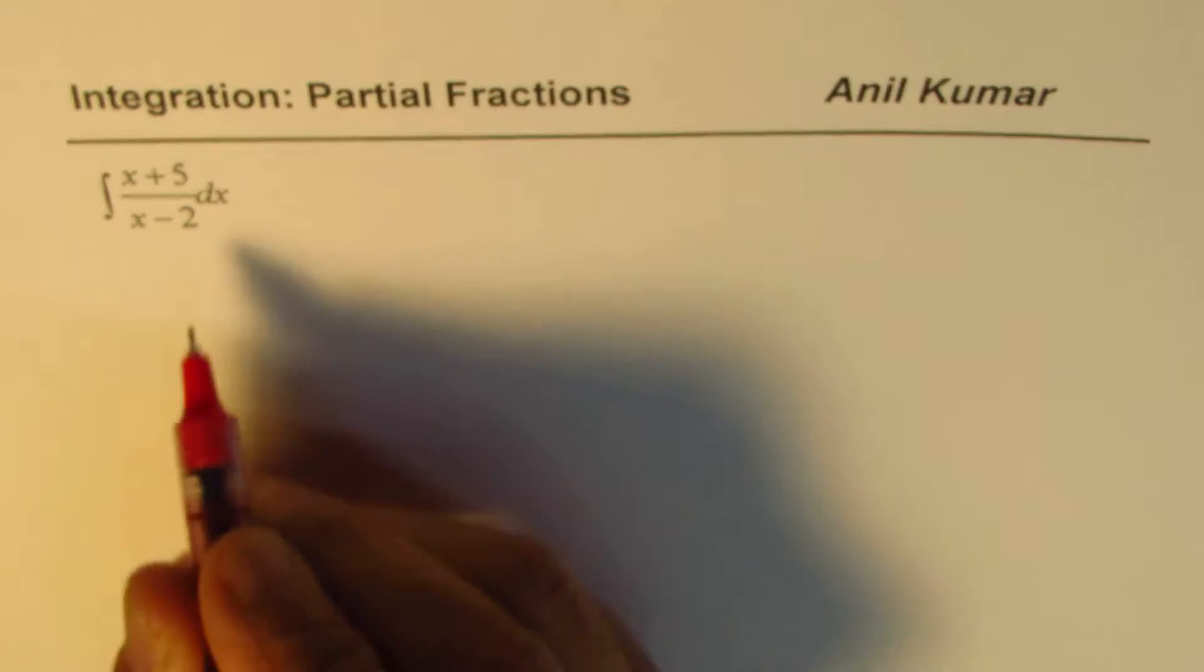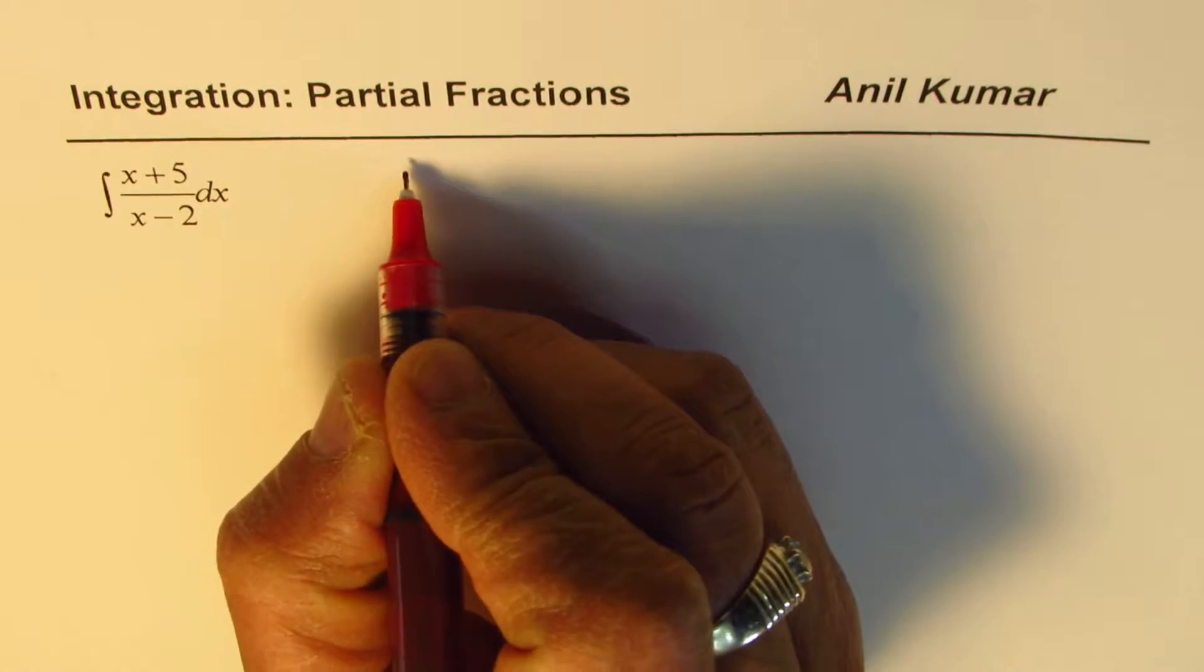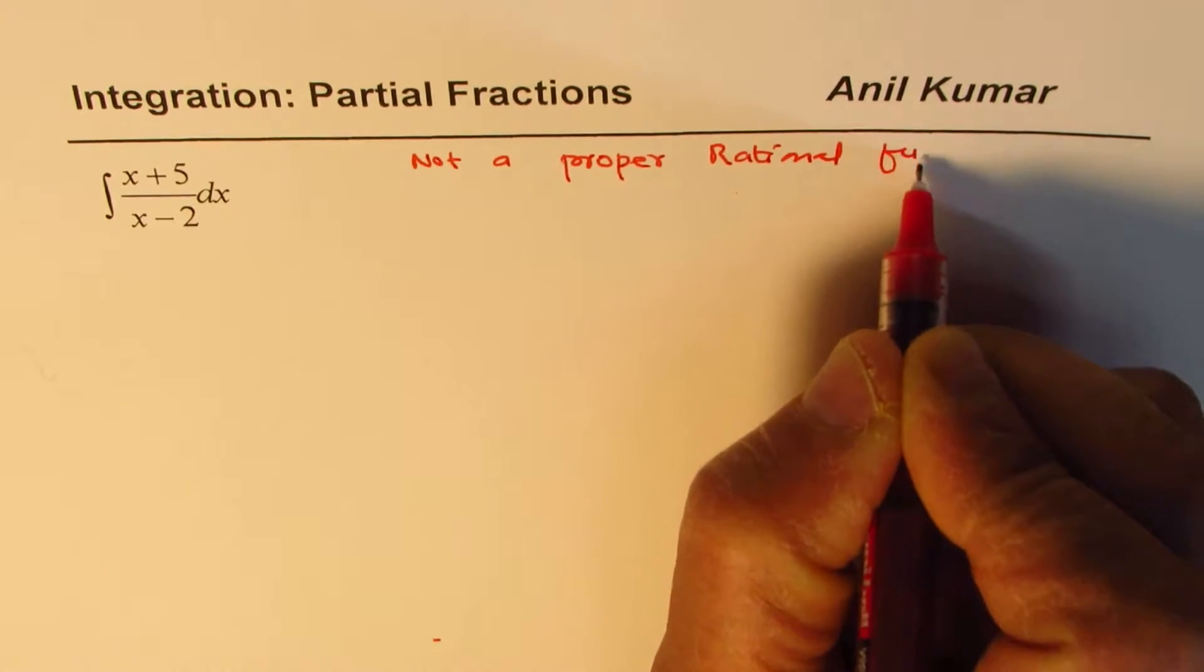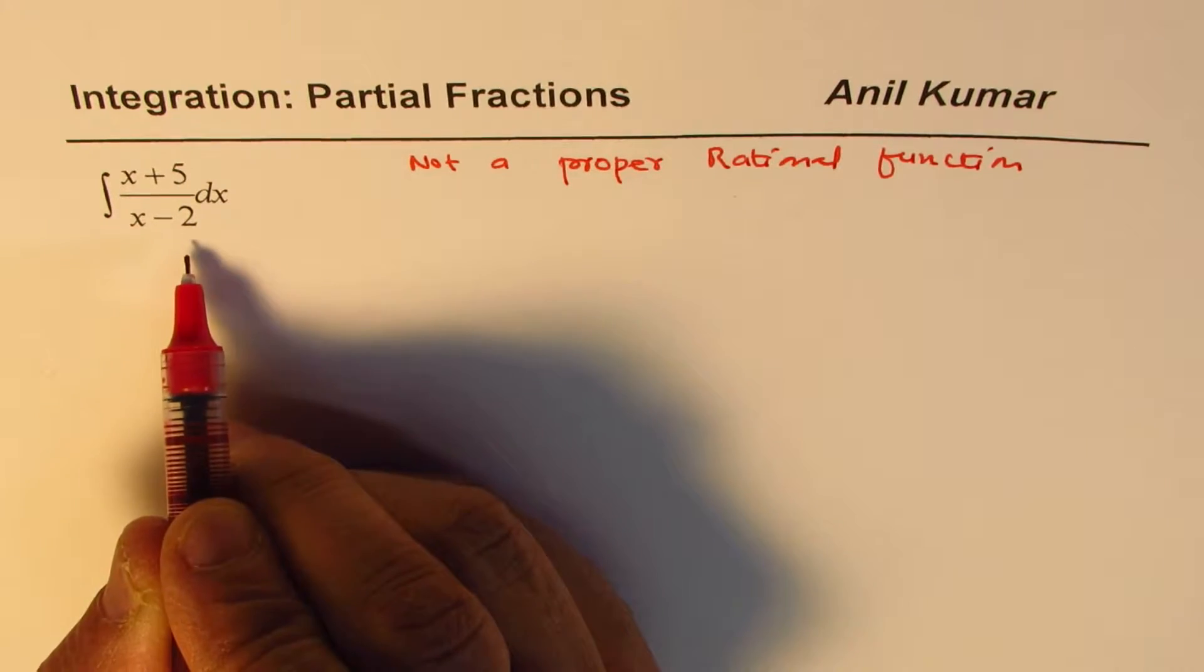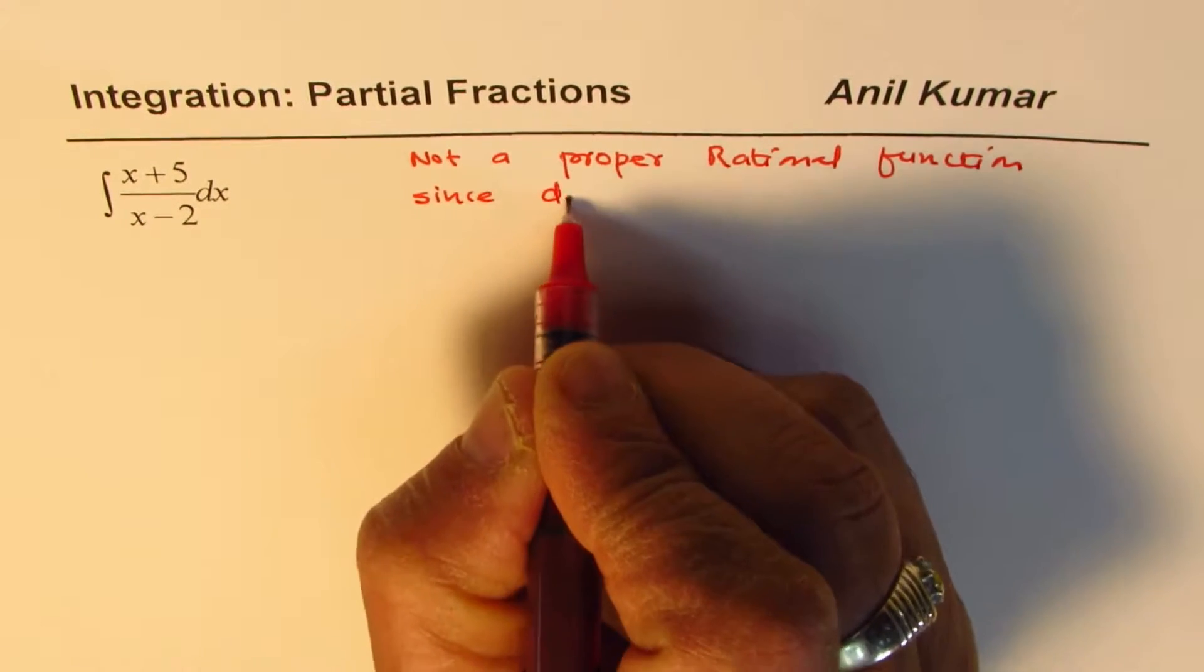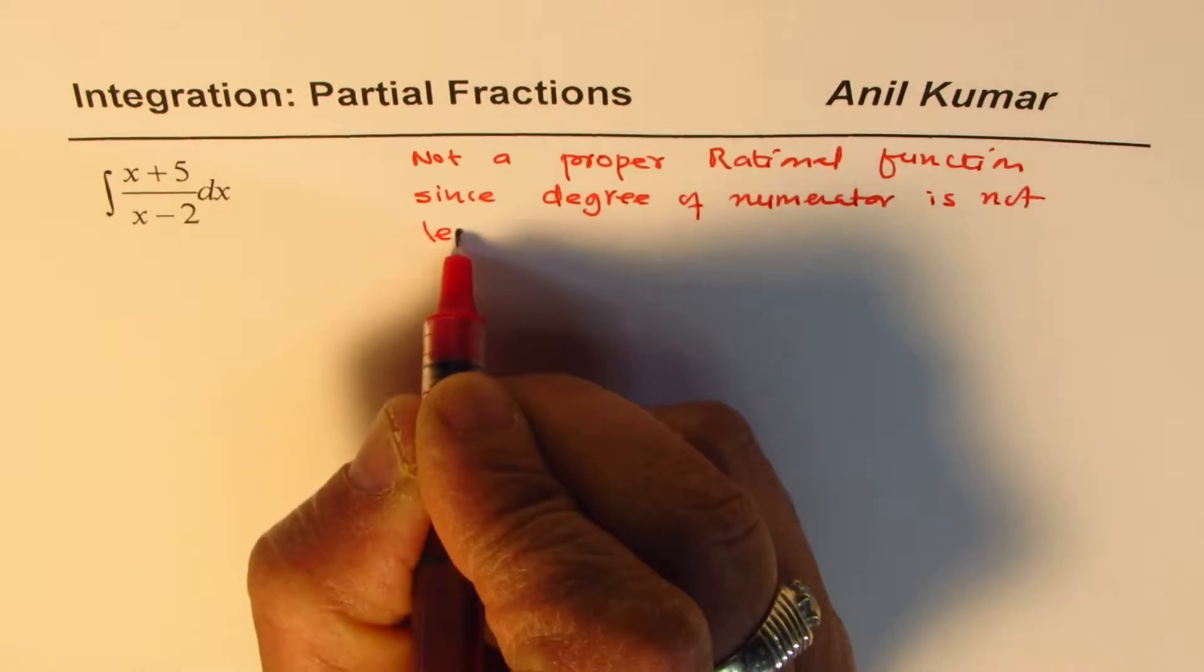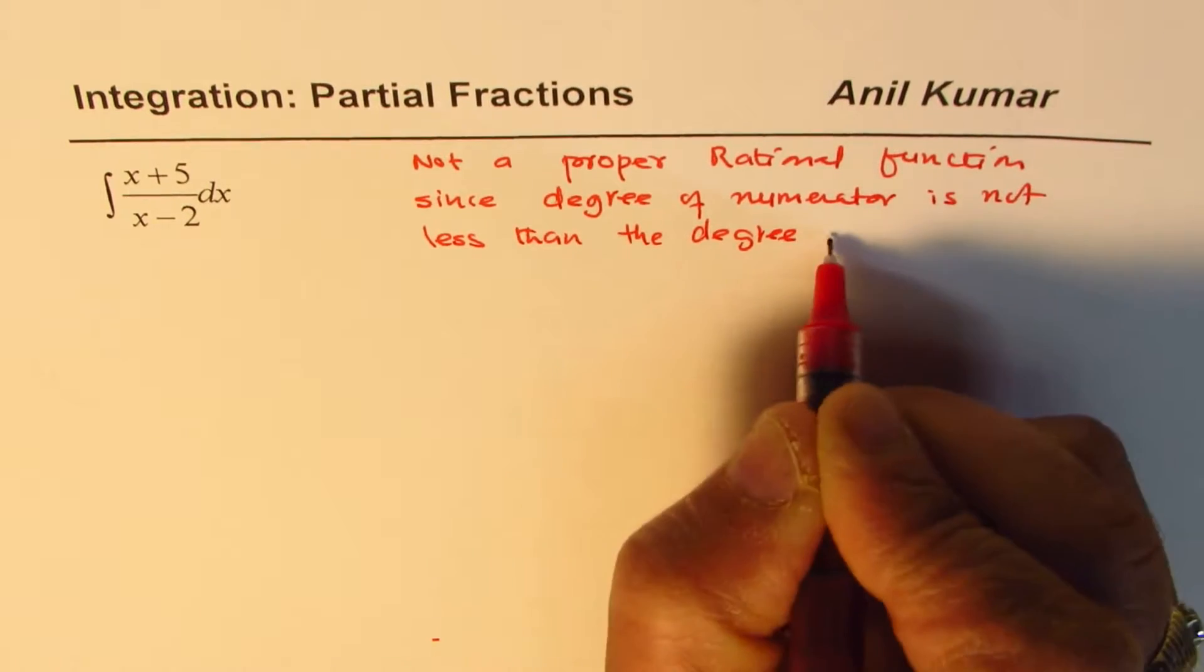Now what you notice here is that the degree of numerator is not less than degree of denominator. So it is not a proper rational function since degree of numerator is not less than the degree of denominator.